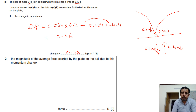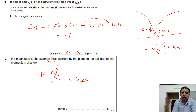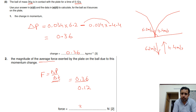Finally, we find the average force. The average force equals the change in momentum divided by the contact time. The change in momentum is 0.36 and delta t is 0.12 seconds. Solving on the calculator, the answer is 3 newtons. So the average force is 3 newtons. Thank you very much, good luck.